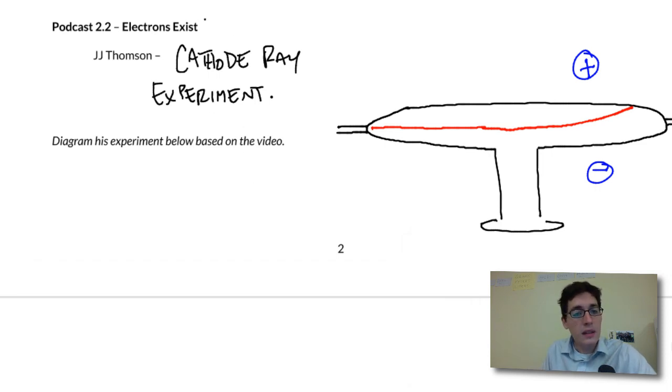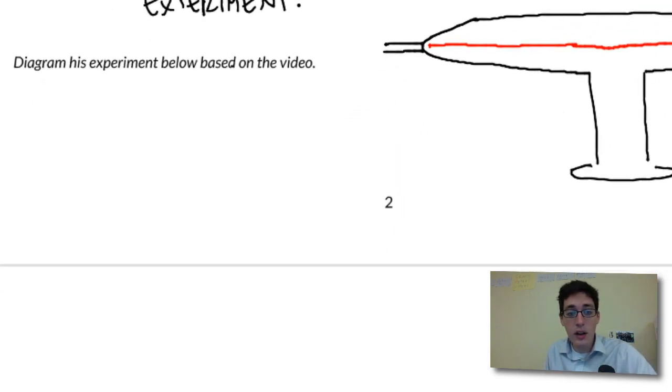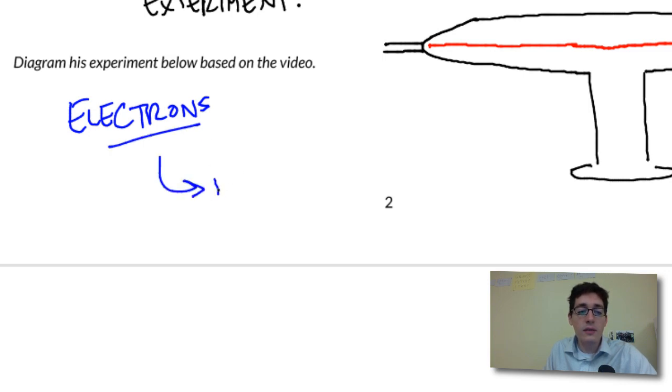So what this means is that there are these things, or this portion of an atom that he called electrons. All this showed was that there are these things called electrons. He showed their existence and that they have a negative charge.